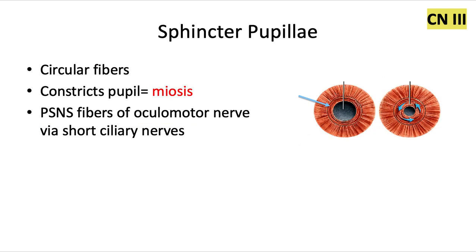The sphincter pupillae muscle refers to the inner circular fibers right around the pupil of the eye — also called the iris sphincter. The pupil is the black opening at the center of the colored iris. When this muscle contracts, the pupil gets smaller. It has the same nerve supply as the ciliary muscle, so these two work hand in hand.